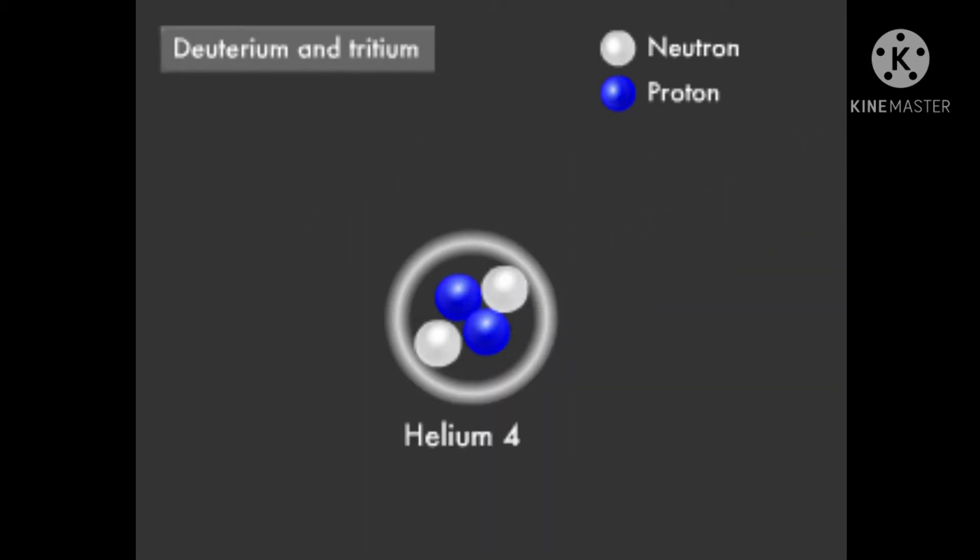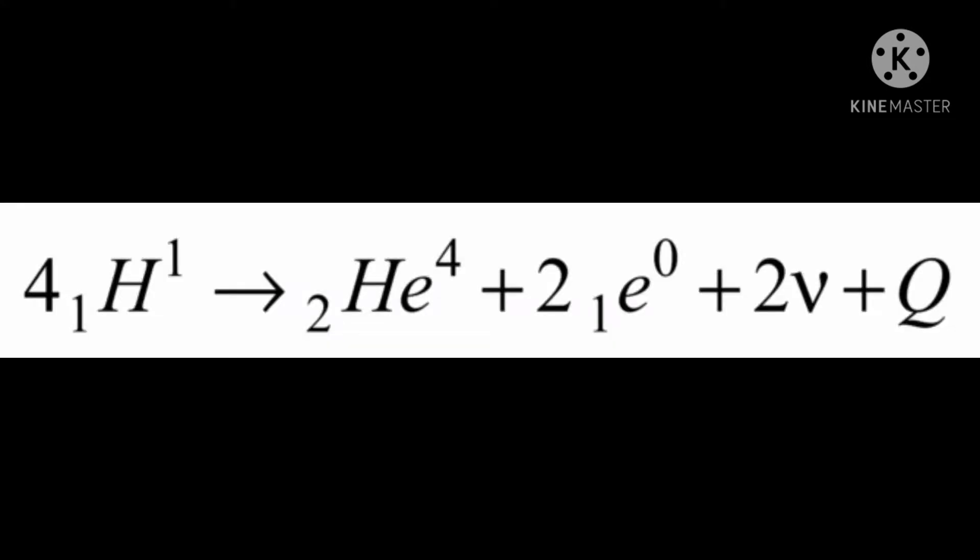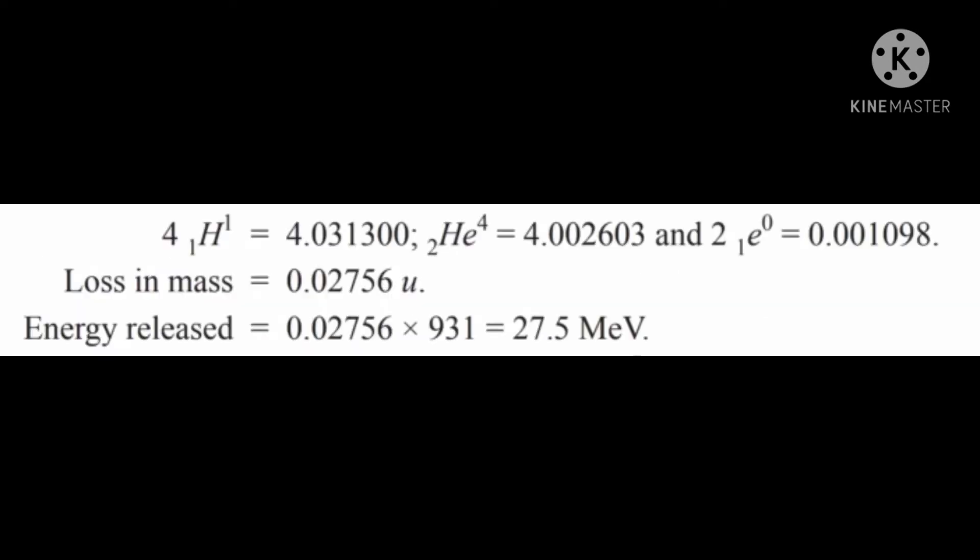The mass of the new element is less than the sum of the masses of the two original elements. For example, when four hydrogen nuclei are fused together, a helium nucleus is formed. The mass of the single nucleus formed is always less than the sum of the masses of the individual light nuclei.